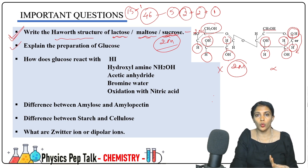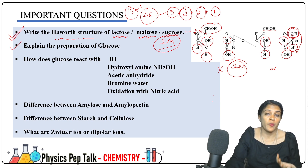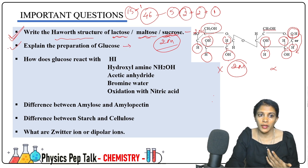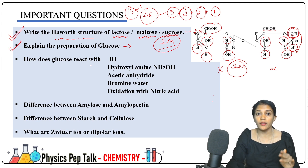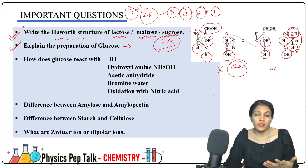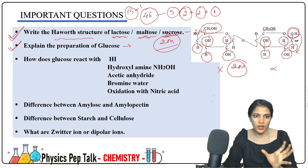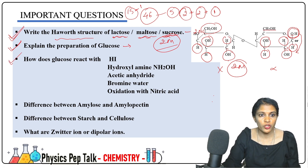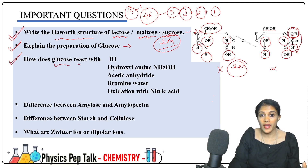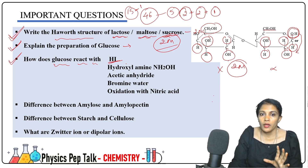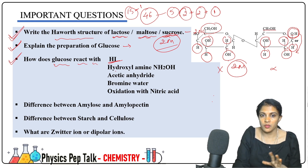Next: explain the preparation of glucose. Glucose — how to prepare — there are two methods. Let me tell you the answer. How does glucose react with hydrogen iodide (HI)? This is the same type of question, but reagents change.